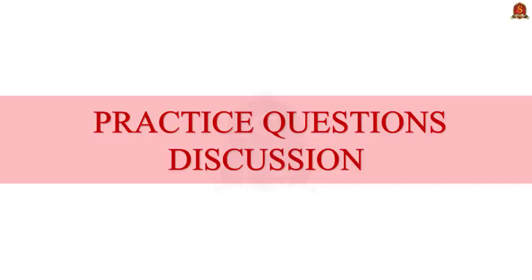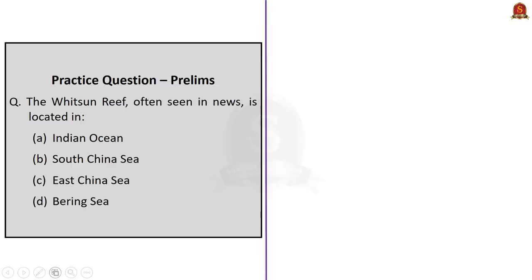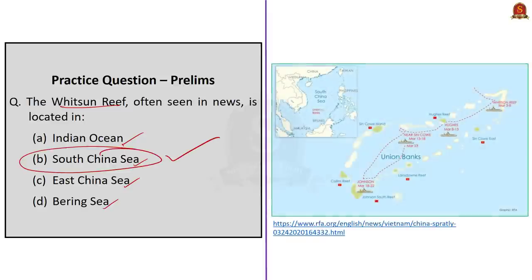We have come to the last session — the practice questions discussion session. The first question asks: the Whitsun Reef, often seen in news, is located in which of the following? Option A: Indian Ocean; Option B: South China Sea; Option C: East China Sea; Option D: Bering Sea. The correct answer is Option B, South China Sea.